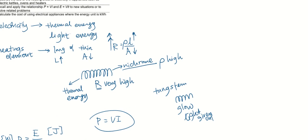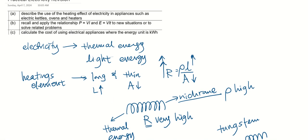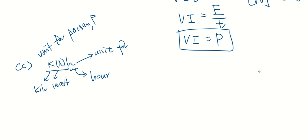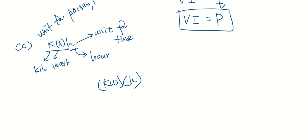We also need to calculate the cost of using electrical appliances where the energy unit is kWh. For part C we are dealing with this unit called kWh. This is actually kilowatt, this is watt, and this is hour. Kilowatt is the unit for power P. Hour is the unit for time.